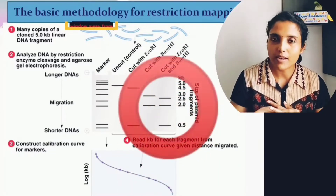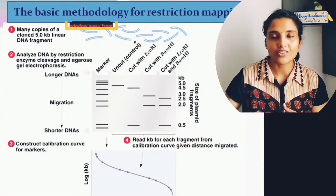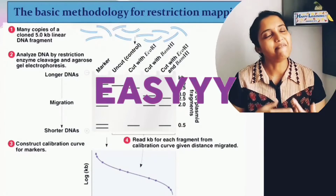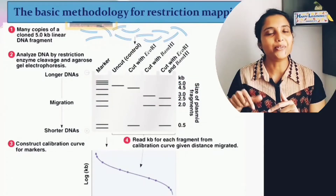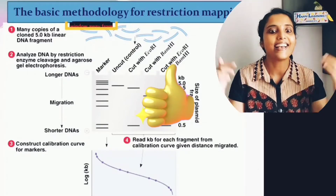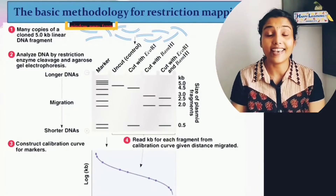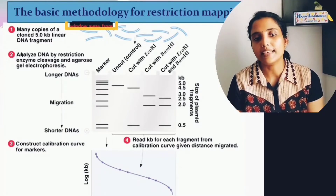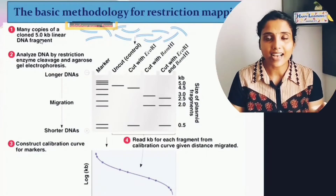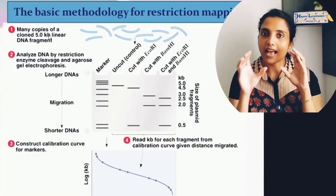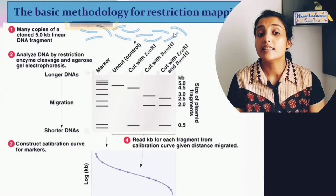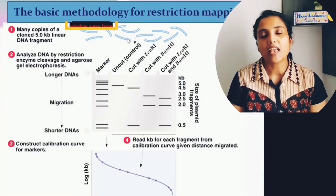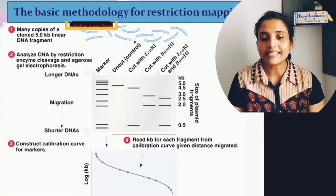In labs, you often work with plasmids and circular DNA, so there may be questions on restriction mapping based on circular DNA. But if you understand the concept with this linear DNA example, it will be easy to solve any restriction mapping question. We have many copies of a cloned 5 kb linear DNA fragment — the actual size is already mentioned as 5 kb for our ease.